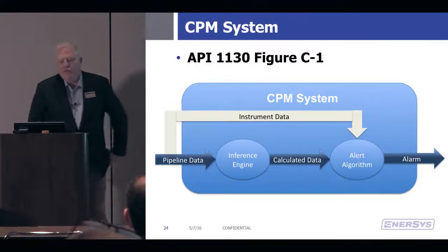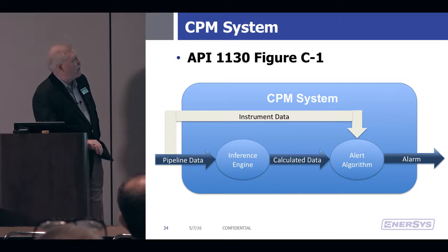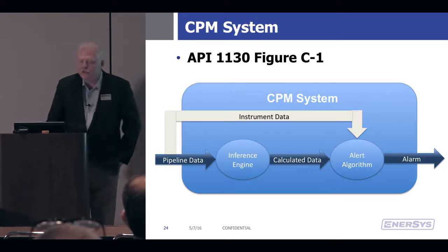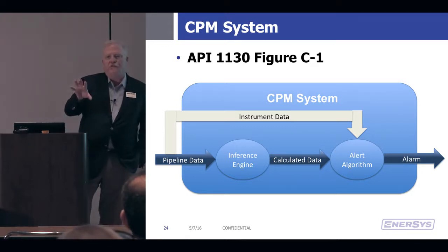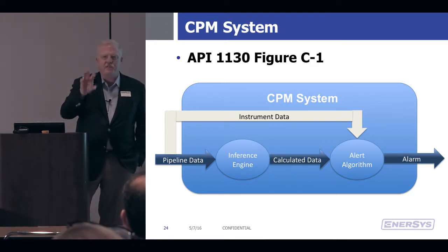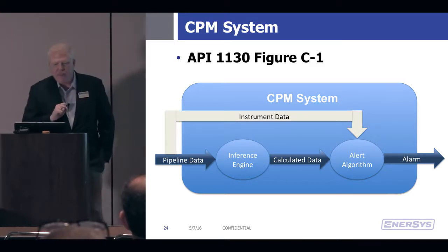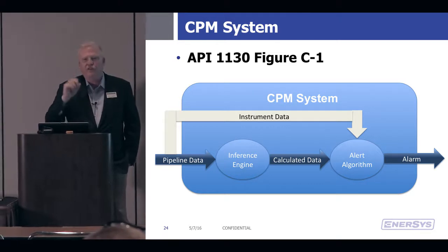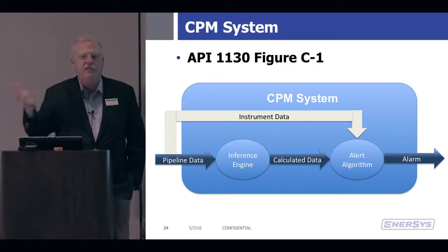This comes out of API 1130. What it's showing here is data coming in, and that data's going into an inference engine — that's the leak detection system. It's the software that's sampling the real-time data and performing calculations to determine if the real-time data agrees with what it thinks it should be seeing.